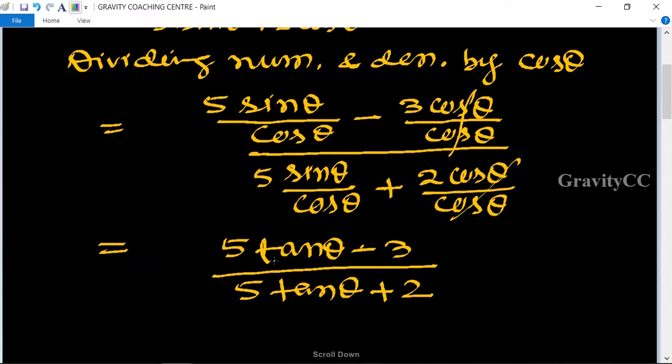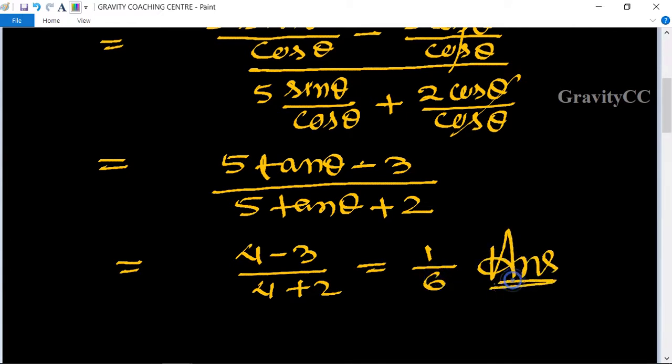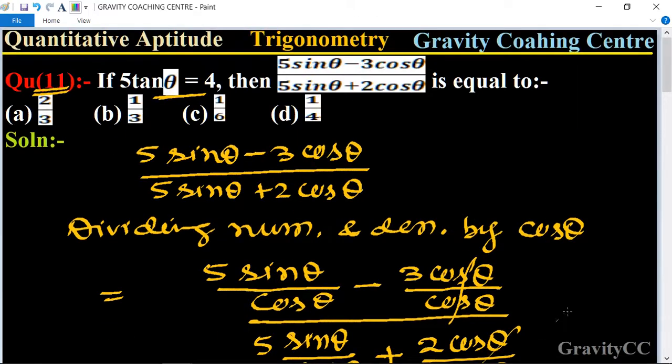So now we put 5 tan θ equal to 4, so 4 - 3 / (4 + 2), so is equal to 1/6, which is the required answer. So option C is the correct answer.